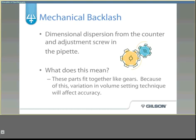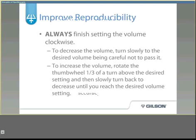Mechanical backlash is the dimensional dispersion from the counter and adjustment screw in the pipette. These parts fit together like gears, and variation in volume-setting technique will affect accuracy. To improve reproducibility, always finish setting the volume clockwise. To decrease the volume, turn the push button slowly to the desired volume without passing it. To increase the volume, rotate the thumb wheel one third of a turn above the desired setting, then slowly turn back to the desired volume, so that mechanical backlash always occurs in the same position.